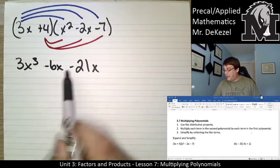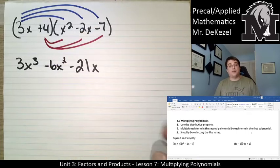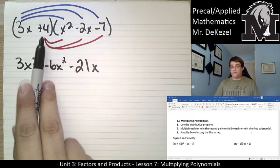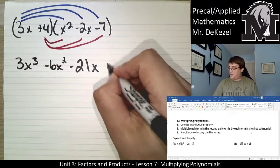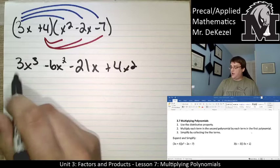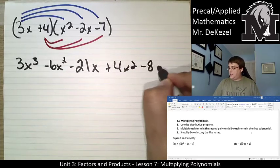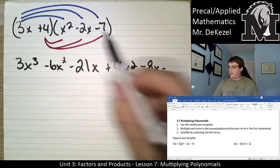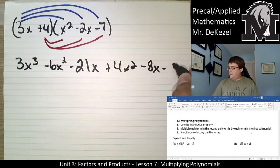Sorry, x times x is x squared. We'll do the bottom part or the second part. 4 times x squared is plus 4x squared. 4 times negative 2 is minus 8x and 4 times minus 7 is minus 28.